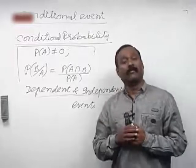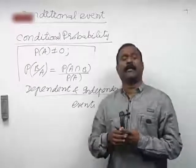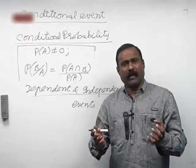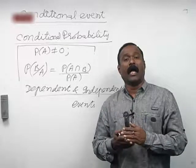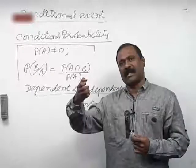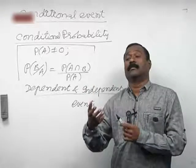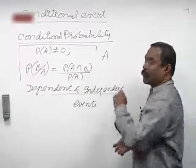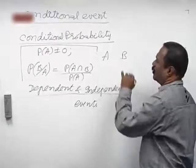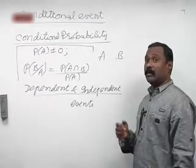Let us take an example of dependent events. I have a bag with 17 different colored balls. I take one ball, see its color, and replace the ball back in the bag — that event is called A. A second time I draw another ball, see its color, and replace it — that event is called B. Now think about whether events A and B are dependent or independent.